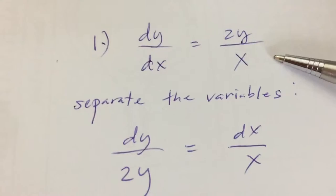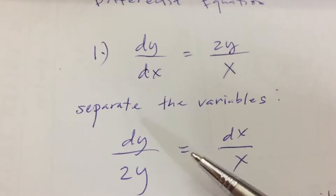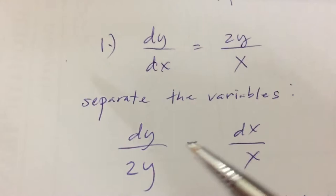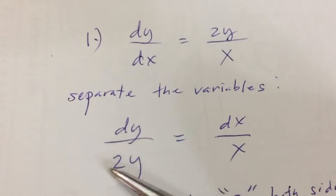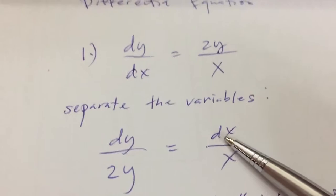Let the y's at the left side of the equation and the x's at the right side of the equation. As you can see here, 2y is here - they are all y's - and dx is at the right side, dx over x.